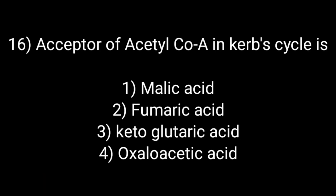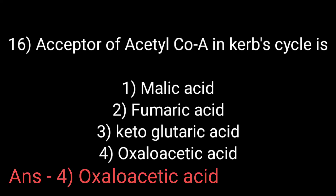The acceptor of acetyl coenzyme A in the Krebs cycle is: Option number first: malic acid. Option number second: fumaric acid. Option number third: ketoglutaric acid. And option number fourth: oxaloacetic acid. The correct answer is option number fourth: oxaloacetic acid.